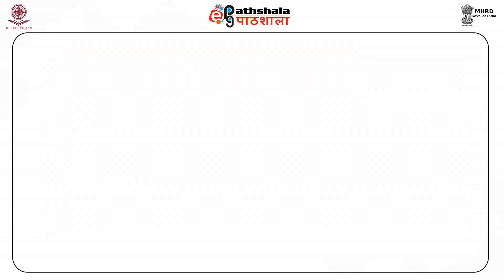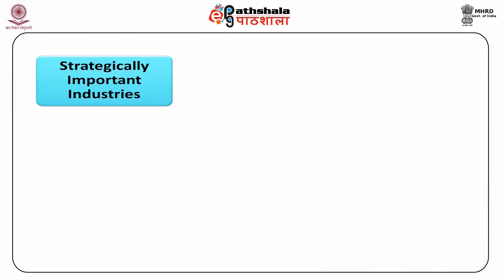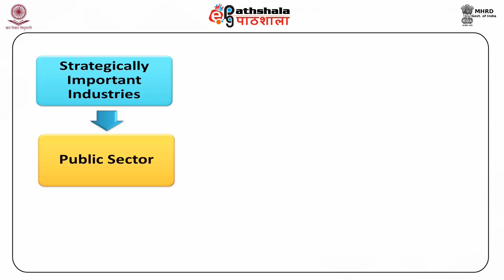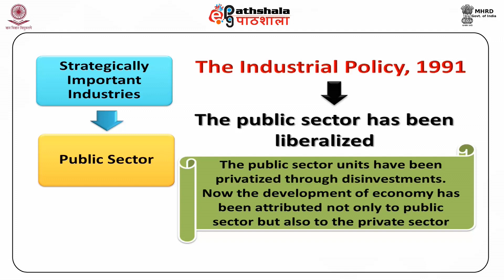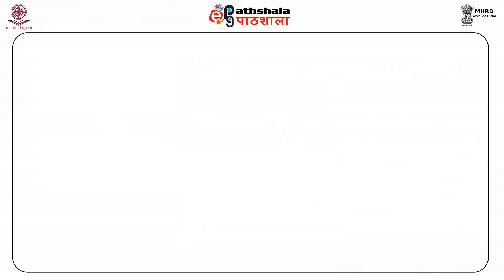Thus, the role of public sector in the economic development of the country had been changed gradually. Initially, all the industries that are strategically important were assigned to public sector only with little importance given to the private sector. But with the introduction of Industrial Policy 1991, the public sector has been liberalized. The public sector units have been privatized through disinvestments. Now, the development of economy has been attributed not only to public sector but also to the private sector. Both the public and private sector are supposed to actively involve and compete in the market. We shall now discuss the change in type of forms of public enterprises.